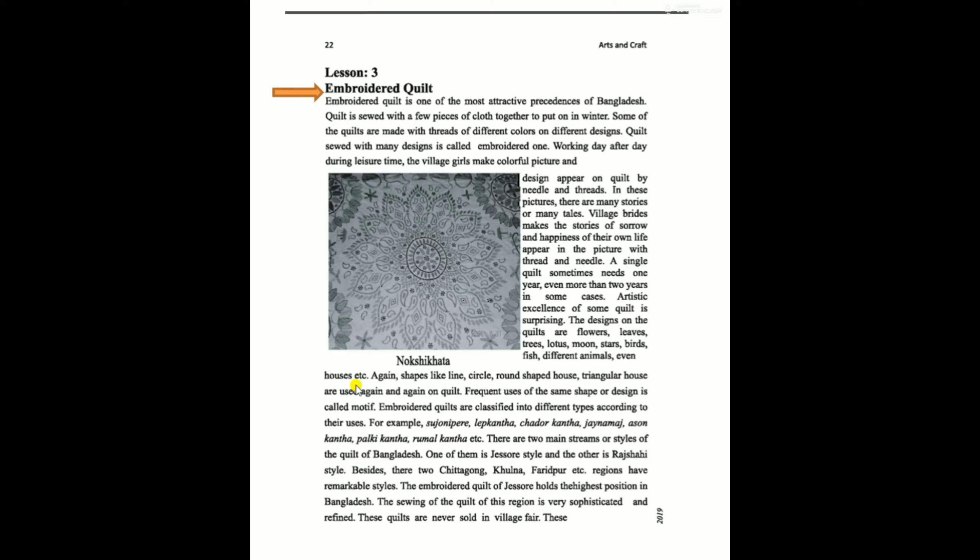The artistic excellence of some quilts is surprising. The designs on the quilts include flowers, leaves, trees, lotus, moon, stars, birds, fish, different animals, even houses, etc. Shapes like lines, circles, round shapes, houses, and geometric shapes are used again and again on quilts. The frequent use of the same shapes or designs is called a motif.